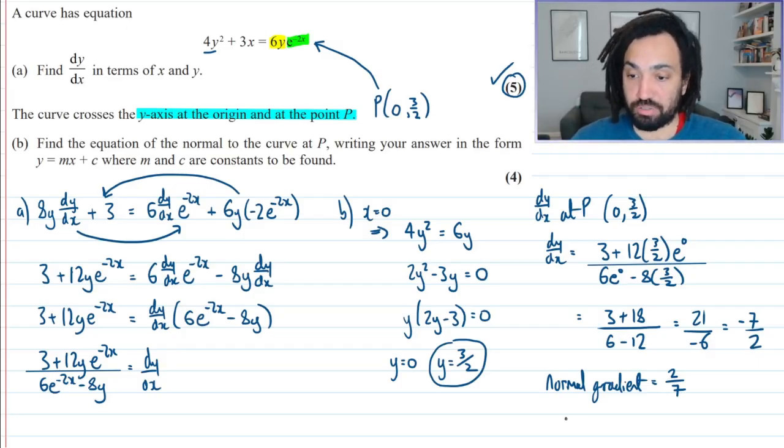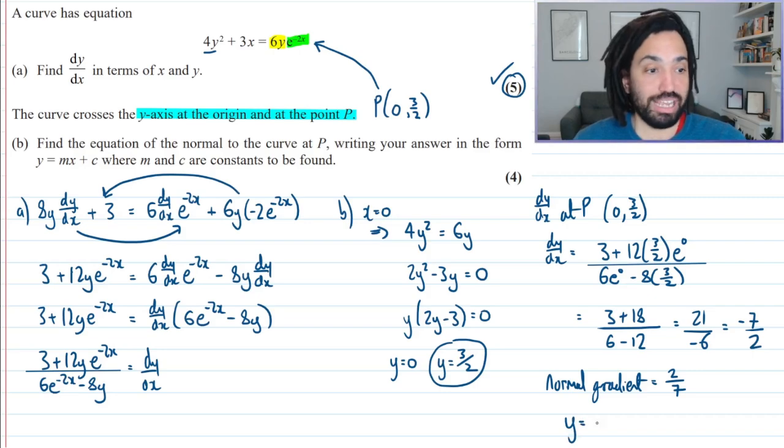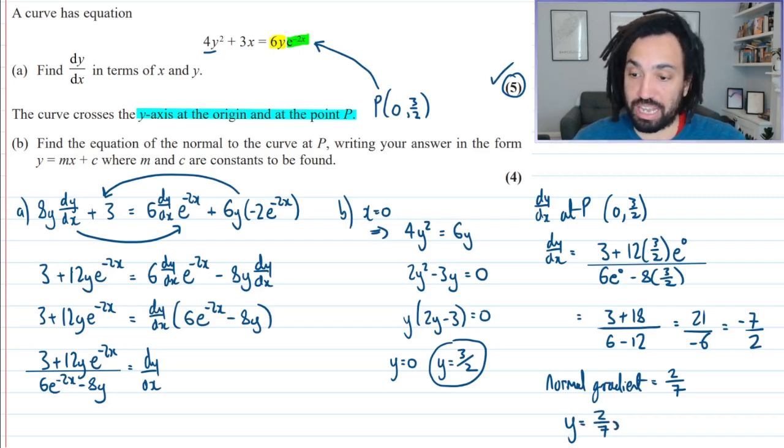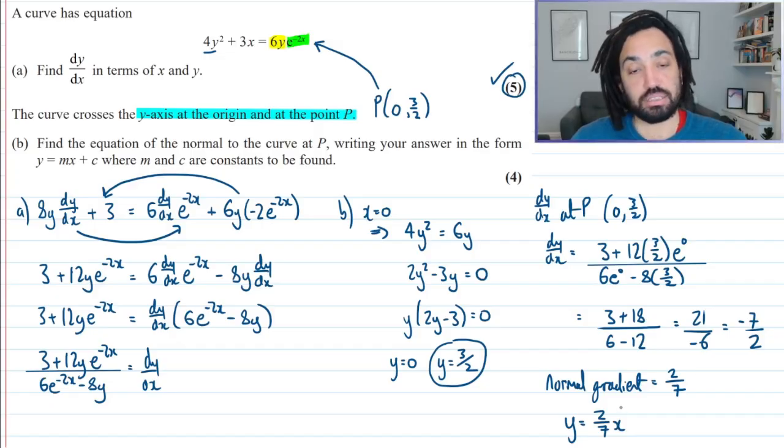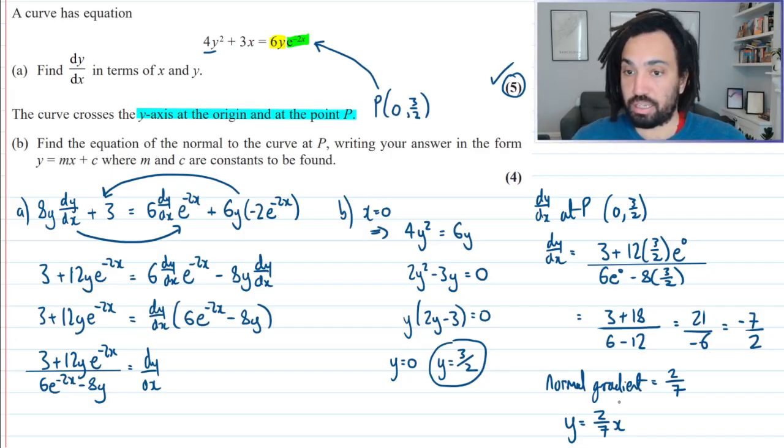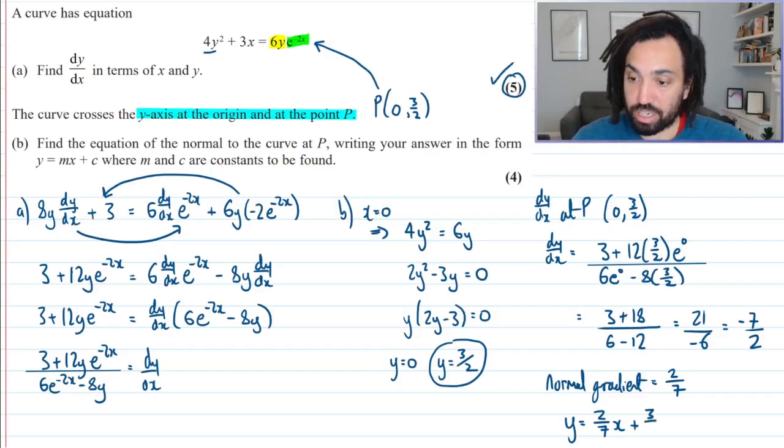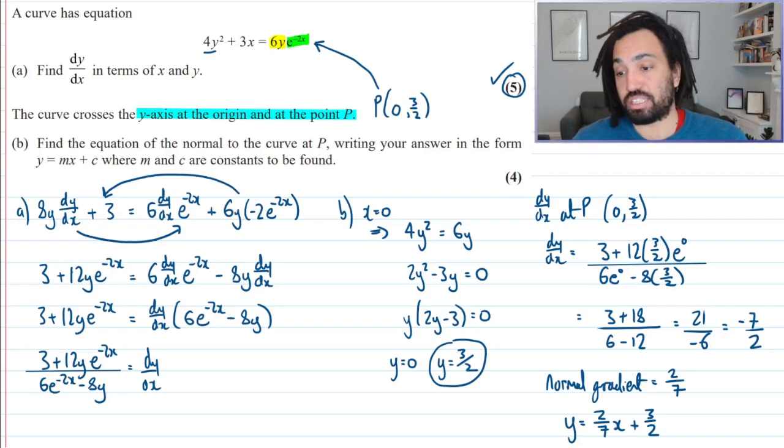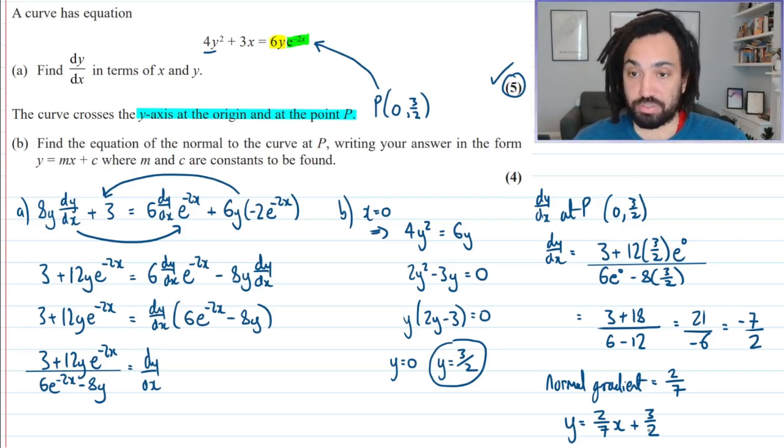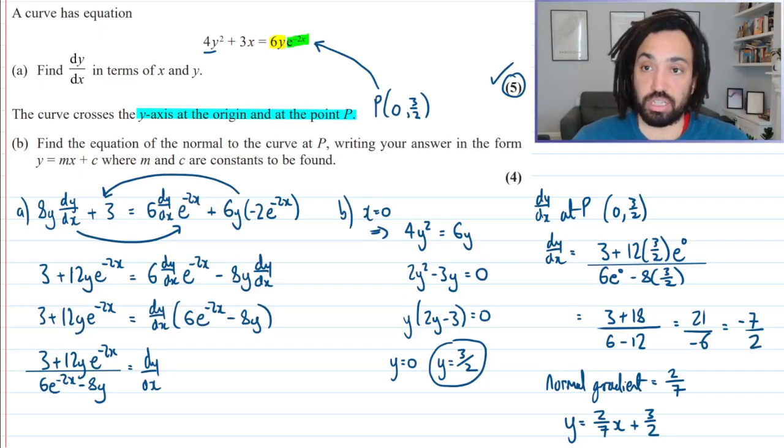And now we just need to write the equation of that normal, which is y equals, well, the gradient is 2 over 7x. And do we have the c constant? No, we don't. We need to sub in. Oh no, of course we do. Because it goes through P, P is actually on the y-axis. So therefore the intercept is 3 over 2. Just subbing in the point P, which we know is definitely on the normal, is going to give me that the intercept is 3 over 2. So bosh, there we go. The intercept is 3 over 2. Lovely days.